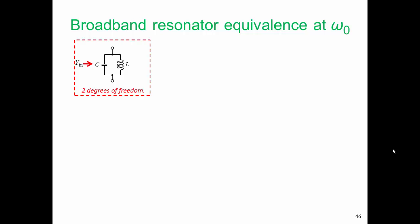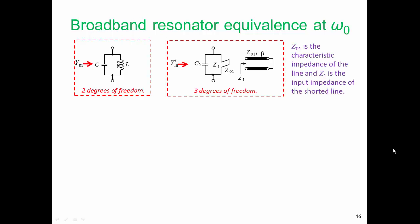And this is how we do it. Here is our original resonator, just L and C. It has two degrees of freedom. And here is the stub in parallel with the capacitor, and it has three degrees of freedom. They are the characteristic impedance of the stub, which is going to be real, not complex, the electrical length of the stub, and the third degree of freedom comes from C0.